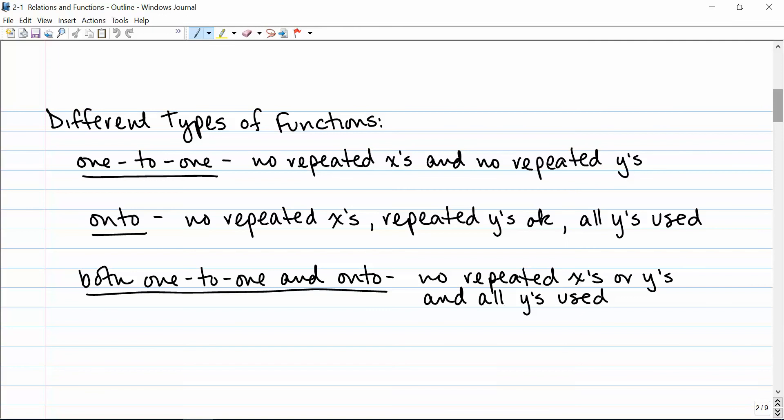There's a couple different types of functions. First type is called one-to-one. It contains no repeated x's and no repeated y's. Each x is paired up with a distinct y. An onto function has no repeated x's, but repeated y's are okay and all of the possible y's are used. And a function that is both one-to-one and onto has no repeated x's or y's and all the y's are used.